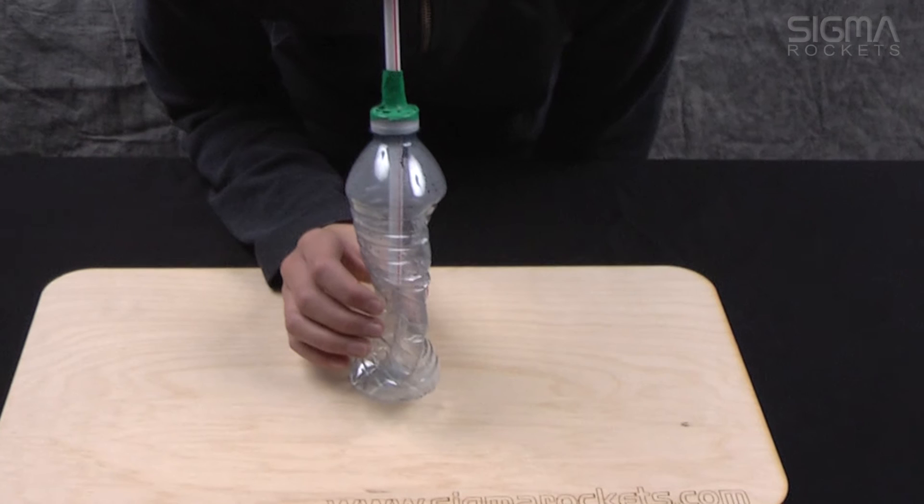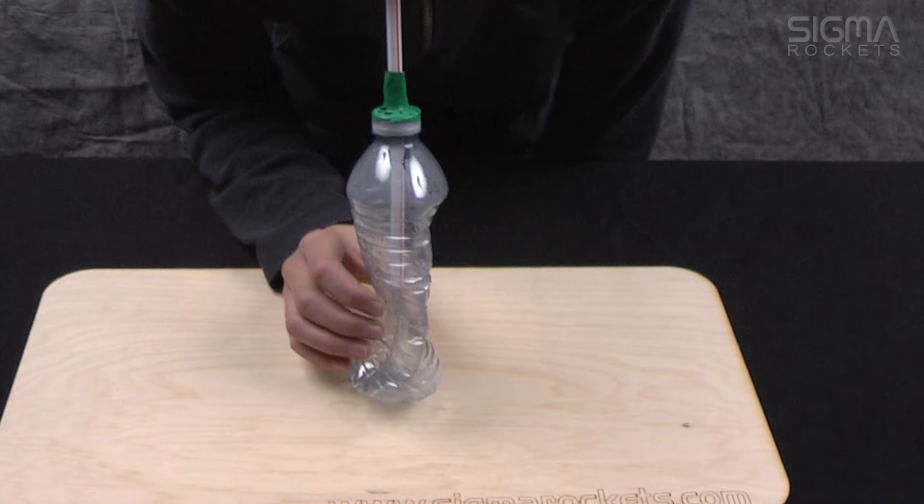Observe how the bottle collapses when we draw air out of it. This is due to the lower air pressure inside the bottle as compared to the outside.